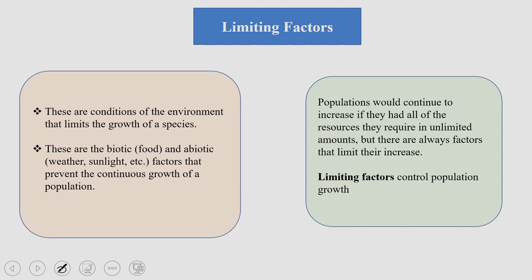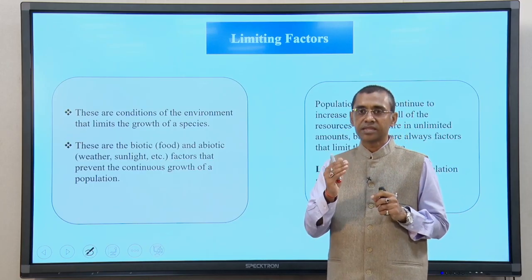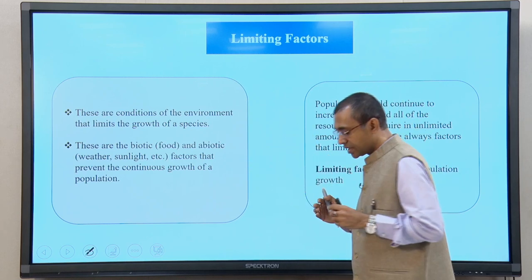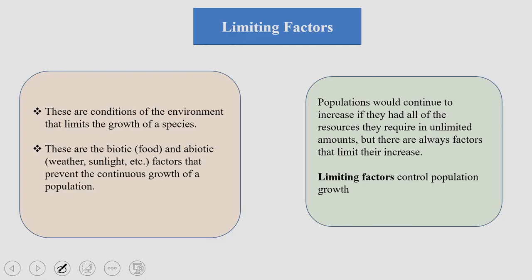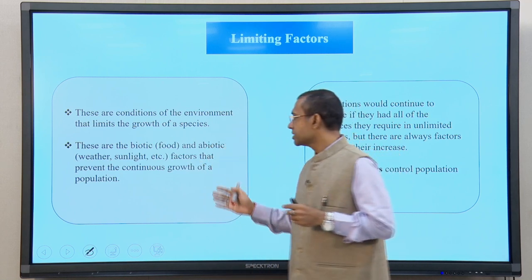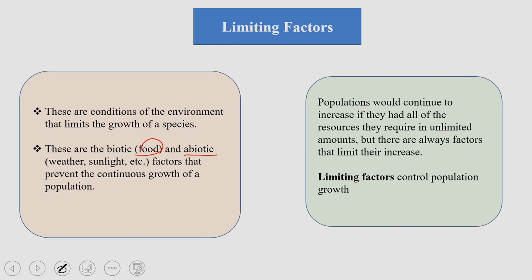What are these limiting factors? Basically, these are conditions of the environment which limit the growth of any species. If that regulation or limiting factor is not there, a particular species or group of species will continue growing indefinitely, and as we understand, that is not sustainable. These limiting factors are biotic factors like food and abiotic factors like weather and sunlight that actually prevent the continuous growth of a population. Populations would continue to increase if they get all the required resources in unlimited amounts, but these limiting factors prohibit them from growing beyond a certain limit. So, limiting factors control population growth beyond a sustainable limit.